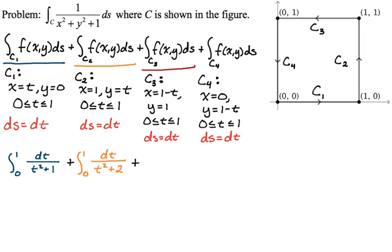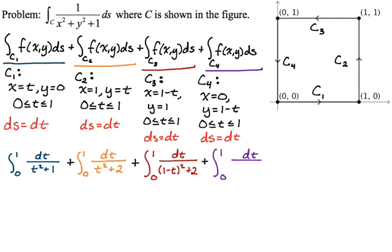For c3: we get the quantity 1 minus t squared plus 1 plus 1 in the denominator, so the integral from 0 to 1 of dt over the quantity 1 minus t squared plus 2 — that one looks a little unusual. And for c4, x is 0 which is nice, so the denominator is the quantity 1 minus t squared plus 1, giving the integral from 0 to 1 of dt over quantity 1 minus t squared plus 1.